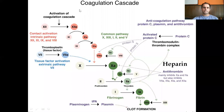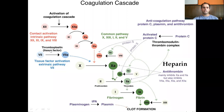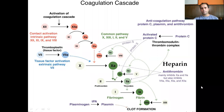Looking at the coagulation cascade, there is an activation pathway and an anticoagulation pathway where protein C, plasmin, and antithrombin are involved — all causing anticoagulation. In the coagulation cascade, the intrinsic pathway involves factors 12, 11, 9, 10, and 8. The extrinsic pathway involves tissue factor activation with thromboplastin activating factor 7. Factors 3 and 7 then work together, and from factor 10 onward there is a common pathway.